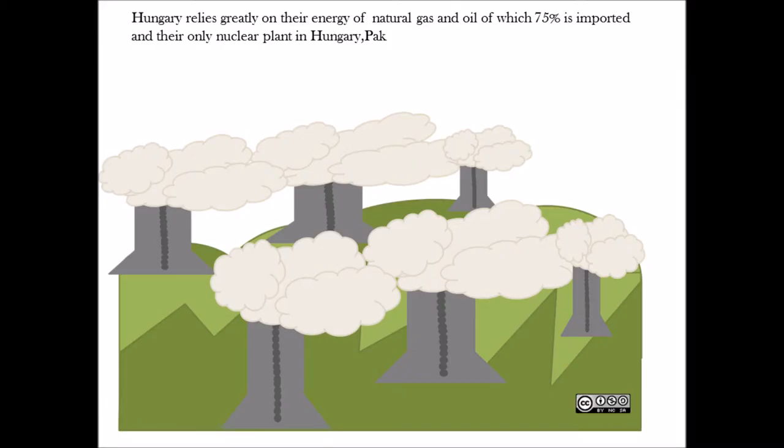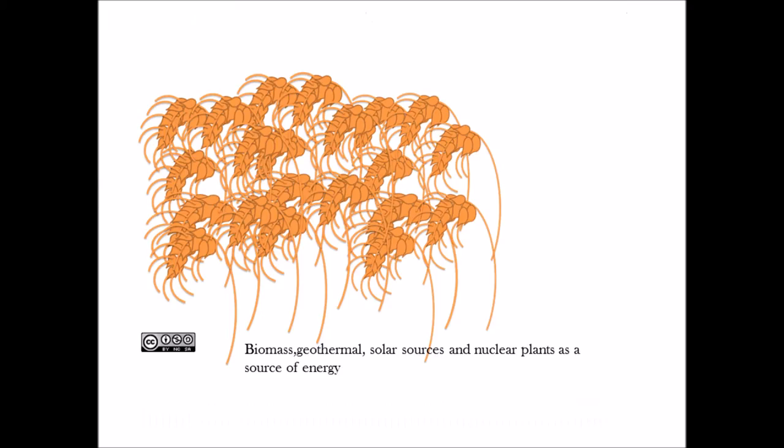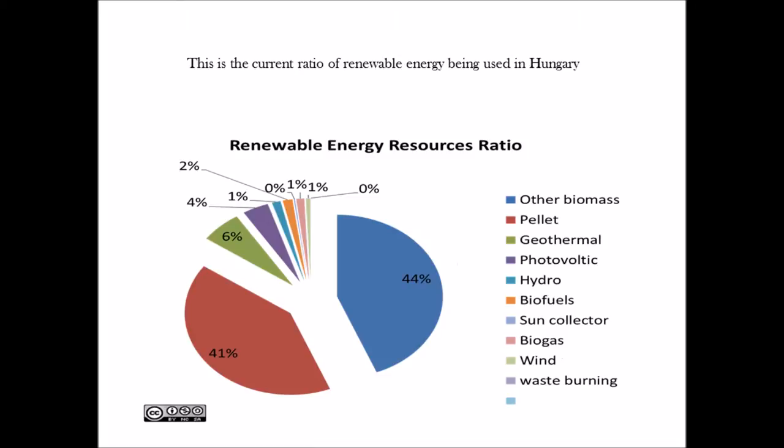Hungary relies greatly on the energy being imported from neighboring states and one of the nuclear plants in the Hungary pack, which generates 42% of energy for Hungary and 80% of energy is also imported from Russia causing a huge strain on Budapest. Experiments on using biomass, especially with rye and maize crop, geothermal, solar sources and nuclear plants as a source of energy seems to be the way forward to renewable energy to develop a more environmentally sustainable economy.